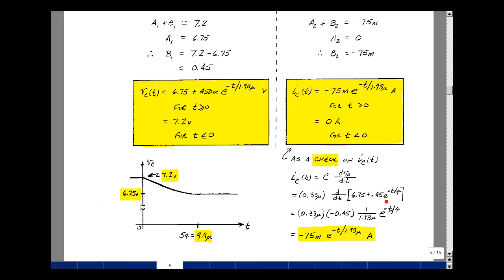Bring that out, and then the derivative of e to the ax is equal to a e to the ax, and a in this case is minus one over tau, so here's my minus sign, and then here's tau of 1.98 microseconds, and then here's our e to the ax again, which is just e to minus t over tau.